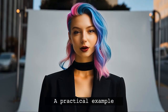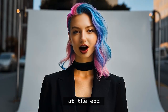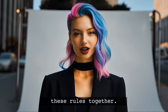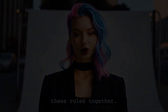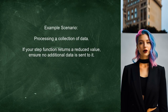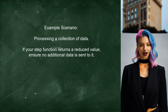At the end of this video, I'll share a practical example that ties all these rules together, making it easier to understand how to apply them in your own code. For instance, consider a scenario where you're processing a collection of data. If your step function returns a reduced value, you need to ensure that no additional data is sent to it. This prevents unexpected behavior in your transducer.